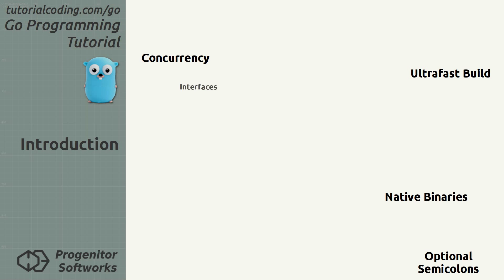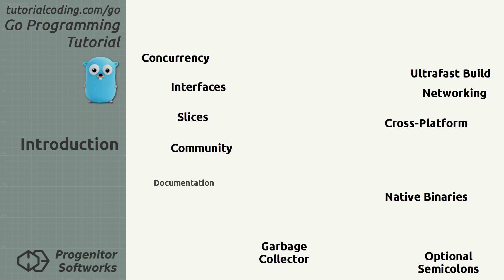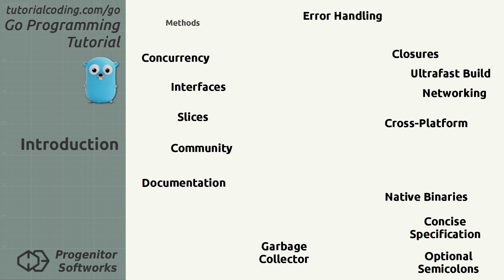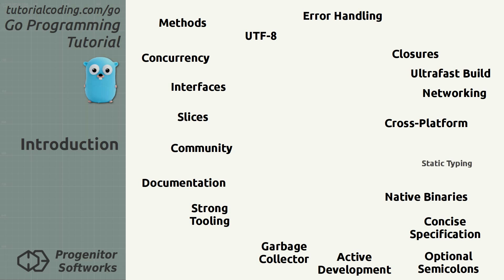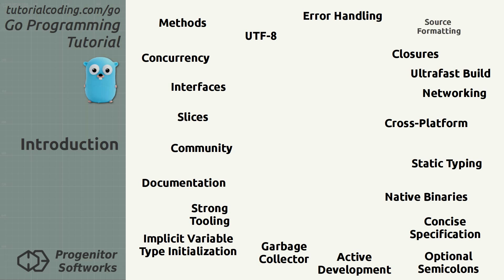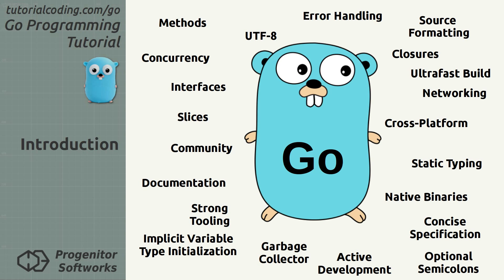Hello and welcome to the Go programming tutorial from tutorialcoding.com. Go is an exciting programming language started around 2007, with the first stable version released in 2012. It's built by a team of veteran software engineers at Google and a community of open source developers. It's designed to be clear and straightforward and avoid feature creep wherever possible.